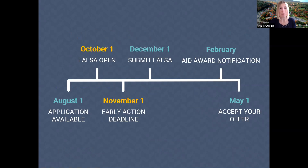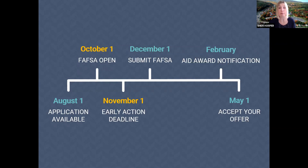The application goes live each year on August 1st. For seniors, the early action deadline has been moved from November 1st to November 15th. Early action is not binding — it simply gives students a decision from Penn State sooner. To be considered, have a completed application submitted by November 15th and indicate on the application that you'd like early action consideration. Students who do both will receive a decision from the University by December 24th.